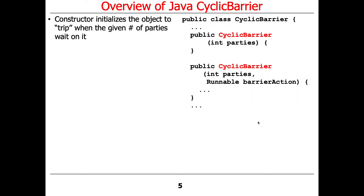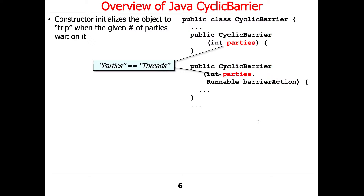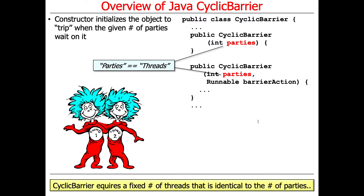The constructor initializes an instance of CyclicBarrier to trip when the given number of parties await on it. It turns out that the word 'parties' is really the same thing as threads in terms of the usage of a CyclicBarrier.